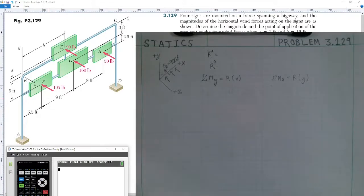So problem 129 says, Four signs are mounted under frames spanning a highway, and the magnitudes of the horizontal wind forces acting on the signs are as shown. Determine the magnitudes and the point of application of the resultant of the four wind forces when A equals 1 foot and B equals 12 feet. So looking at the diagram,